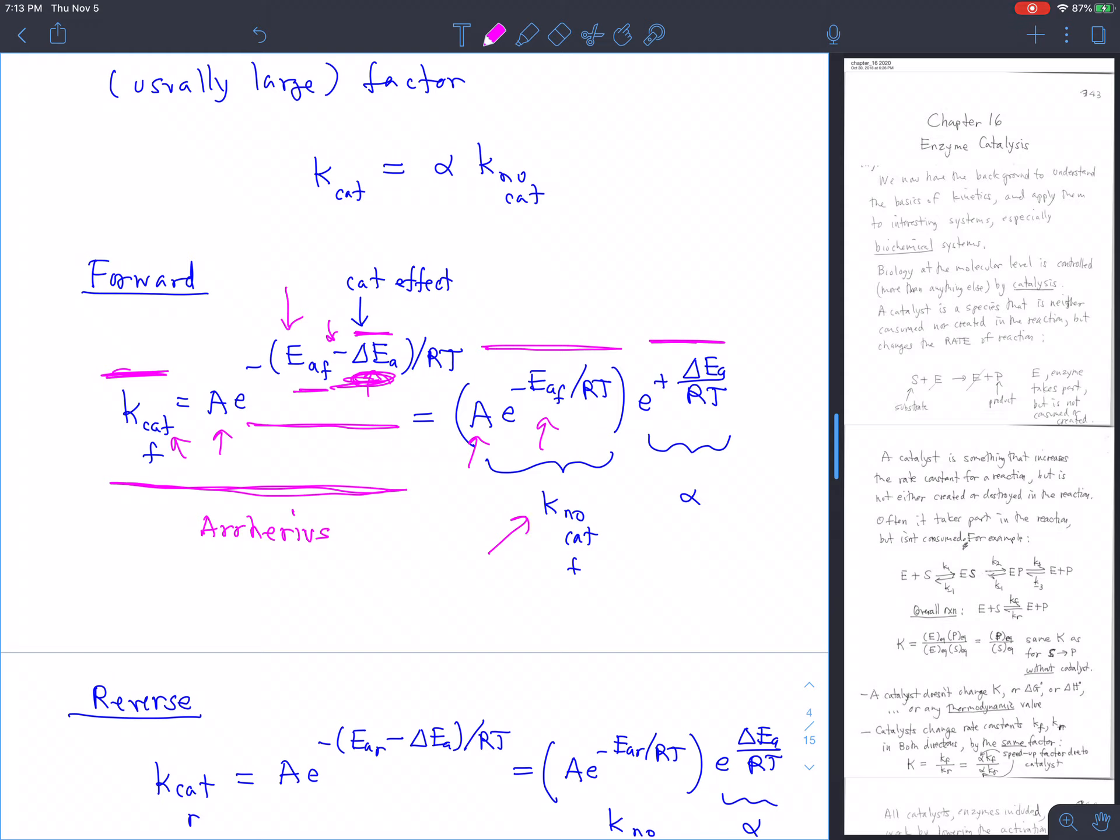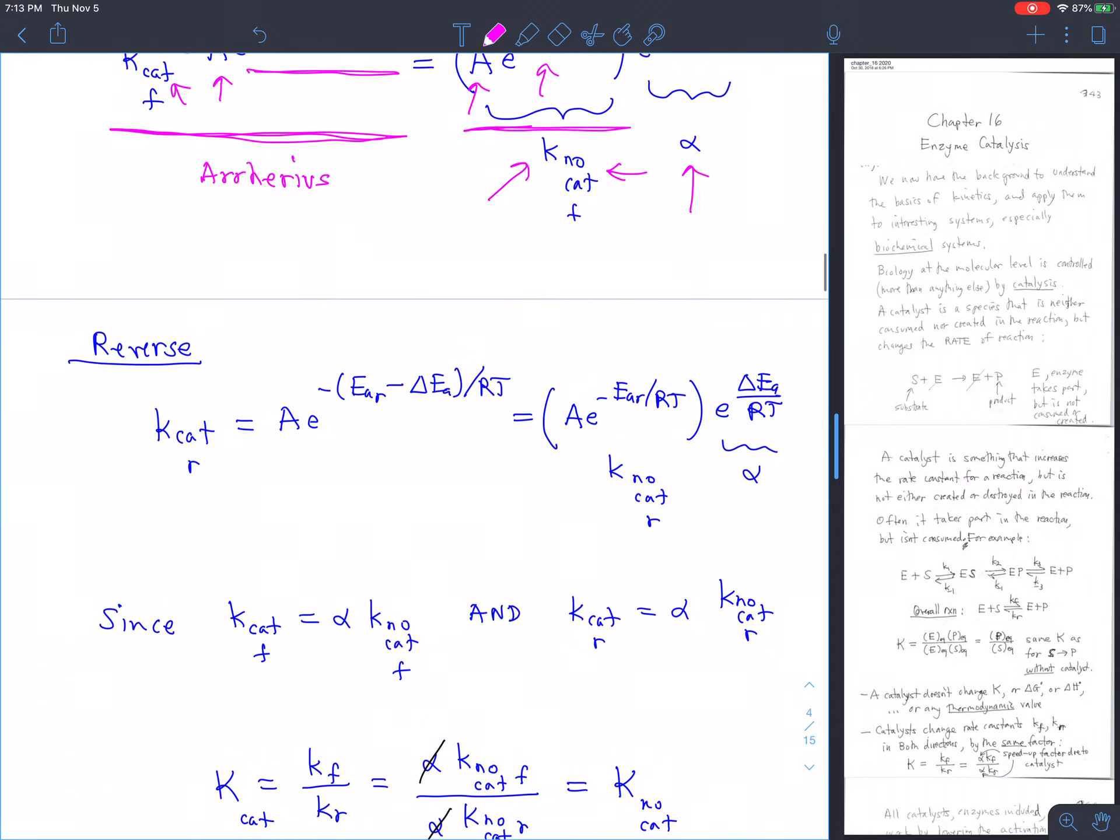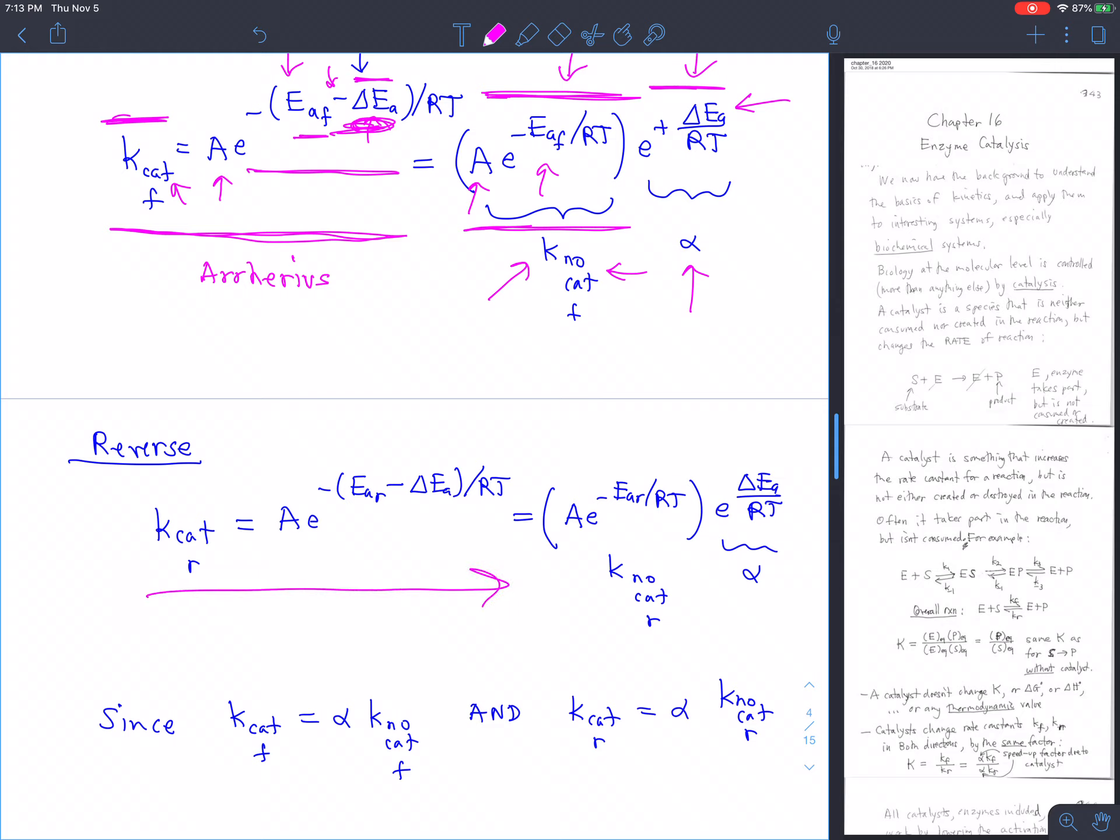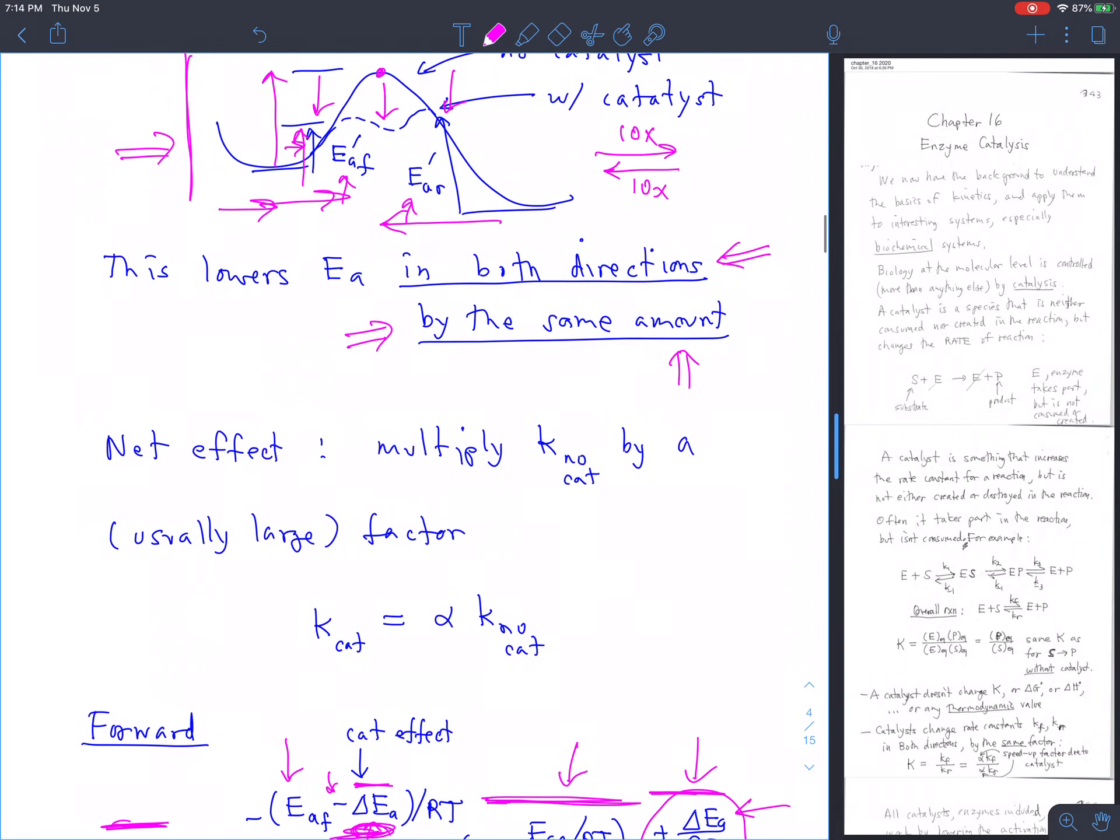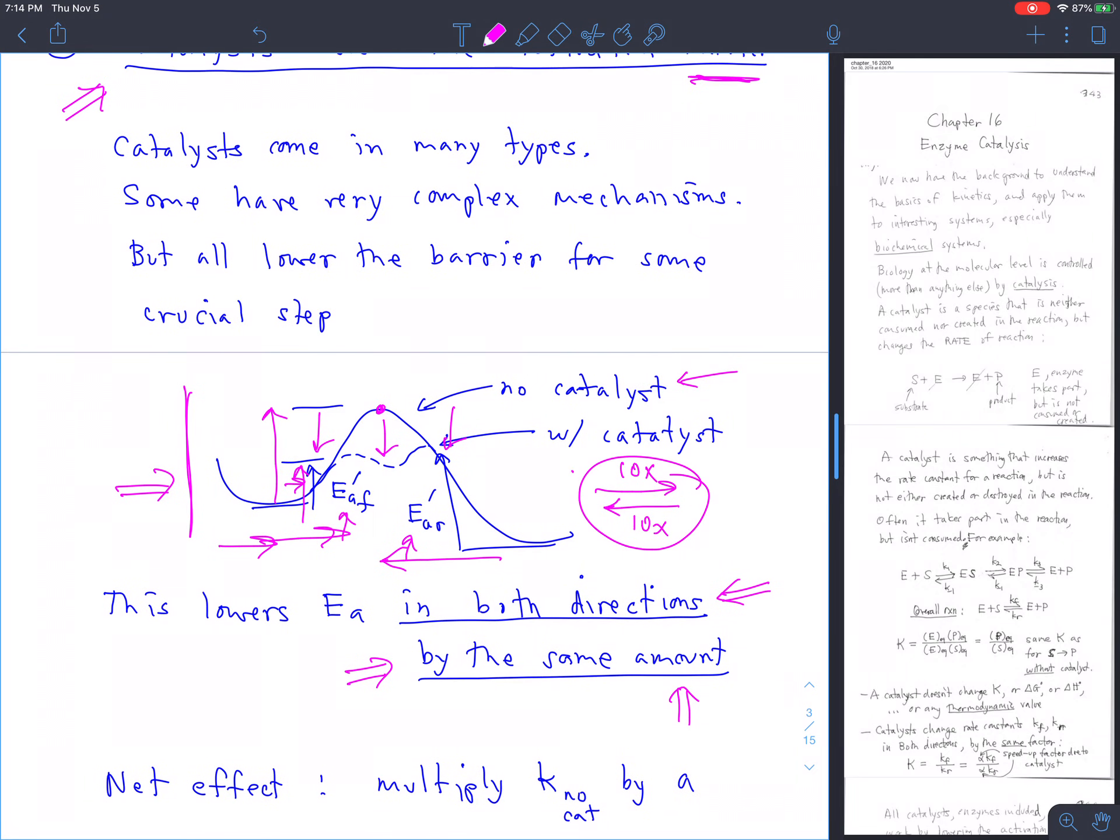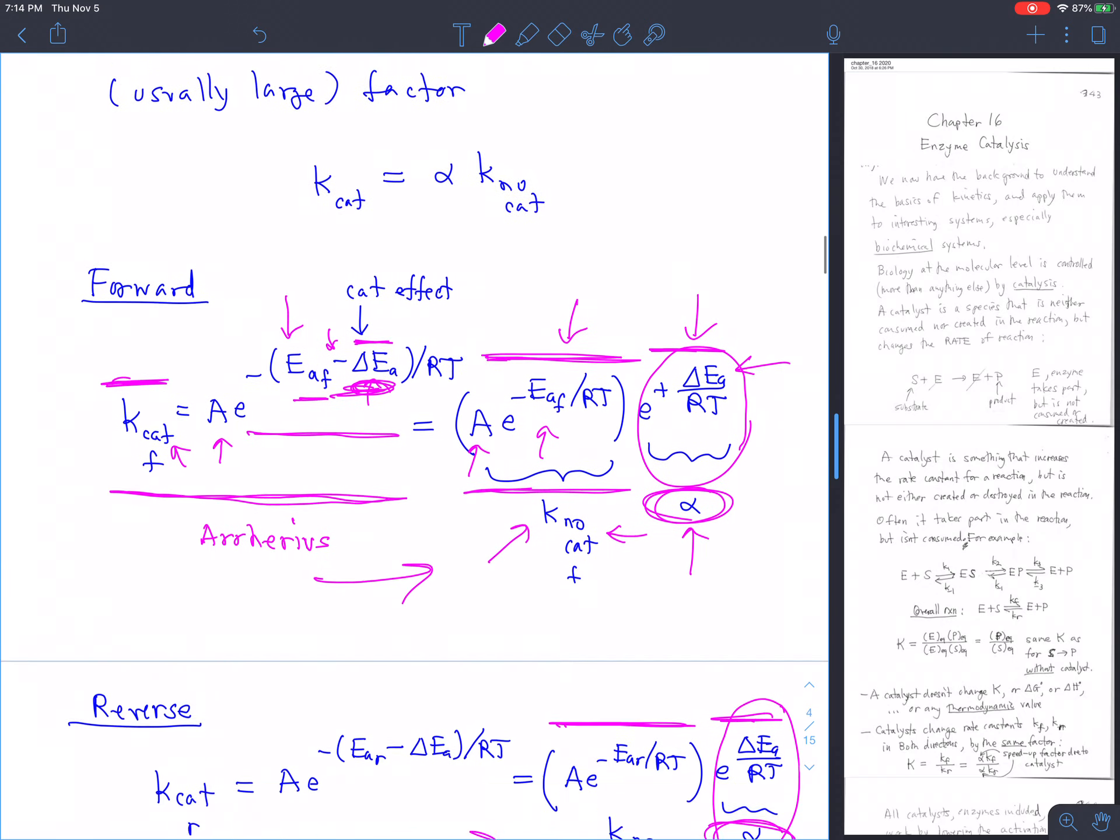Well, using the properties of exponentials, we can factor out this term and we get A e to the minus Eaf over RT times e to the delta Ea over RT. This is the normal rate constant, the normal Arrhenius expression for the rate constant without a catalyst. And the effect of the catalyst, then, is to multiply the old rate constant by a new factor, which depends on how big the change in the height of the barrier was. And it's also true in the reverse direction. If you go through the same algebra, you get the same result. Here's the old reverse rate constant. Here's the new factor. And notice that this is the same thing as this. I call this alpha. It's the same alpha in both the forward and the reverse direction. So we're just speeding things up in both directions by the same amount.